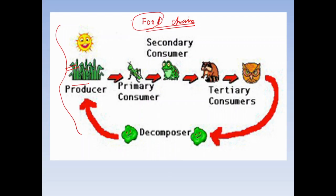So the producer basically produces food. In this way, solar energy is converted into chemical energy and stored in the food.